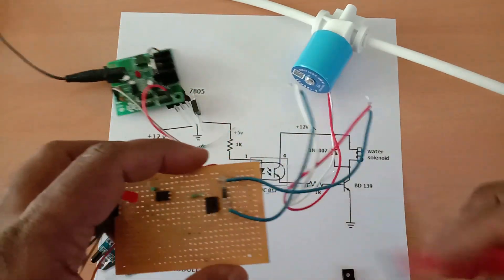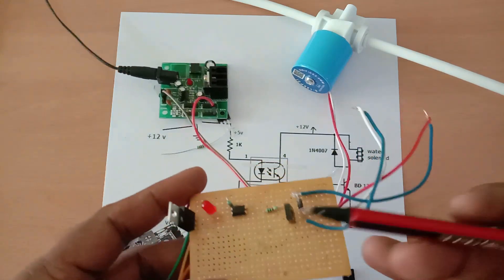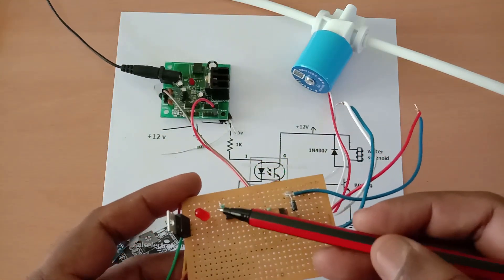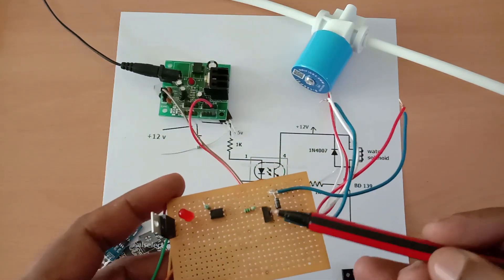The circuit can be easily soldered onto a small PCB, as the number of components is much lesser. A diode is required across the solenoid coil.